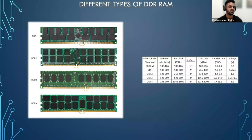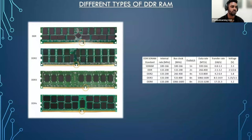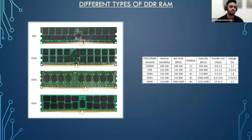DDR2 RAM released around 2004. It ran at 1.8 volts and used 28% less power than DDR1 RAM, making it much more power efficient than its predecessor. Its maximum capacity doubled up to two gigabytes per module, and the maximum speed also multiplied, reaching 533 megahertz.